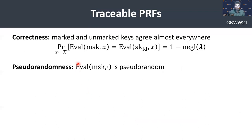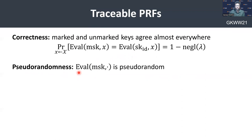The requirements for a traceable PRF also involve the following correctness, which captures the essence of functionality preserving. It says that the marked and unmarked keys agree almost everywhere — so eval(MSK, X) and eval(SK_ID, X) should indeed match almost everywhere. And of course we need the notion of pseudorandomness, which means that the eval algorithm is actually a pseudorandom function.